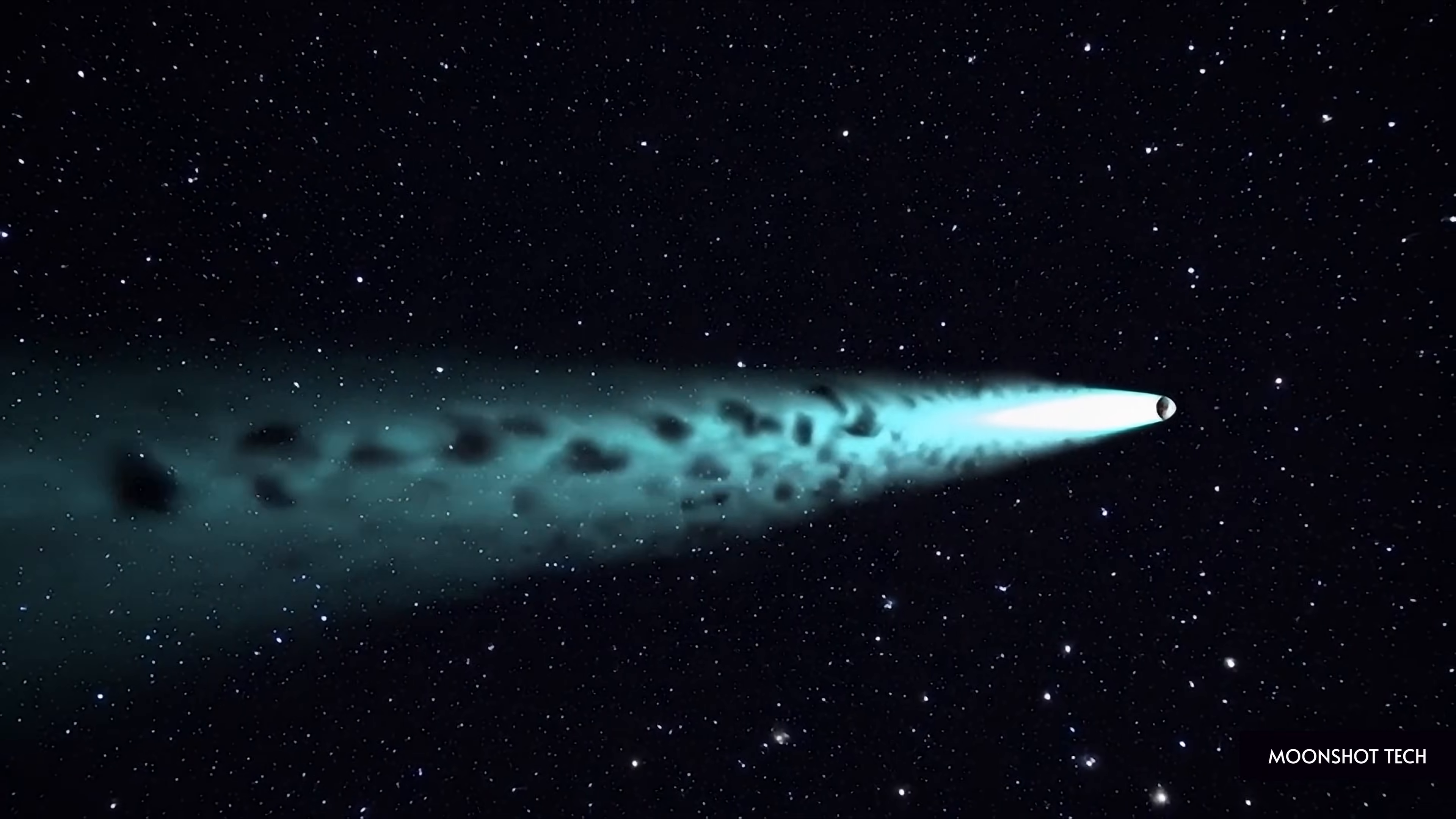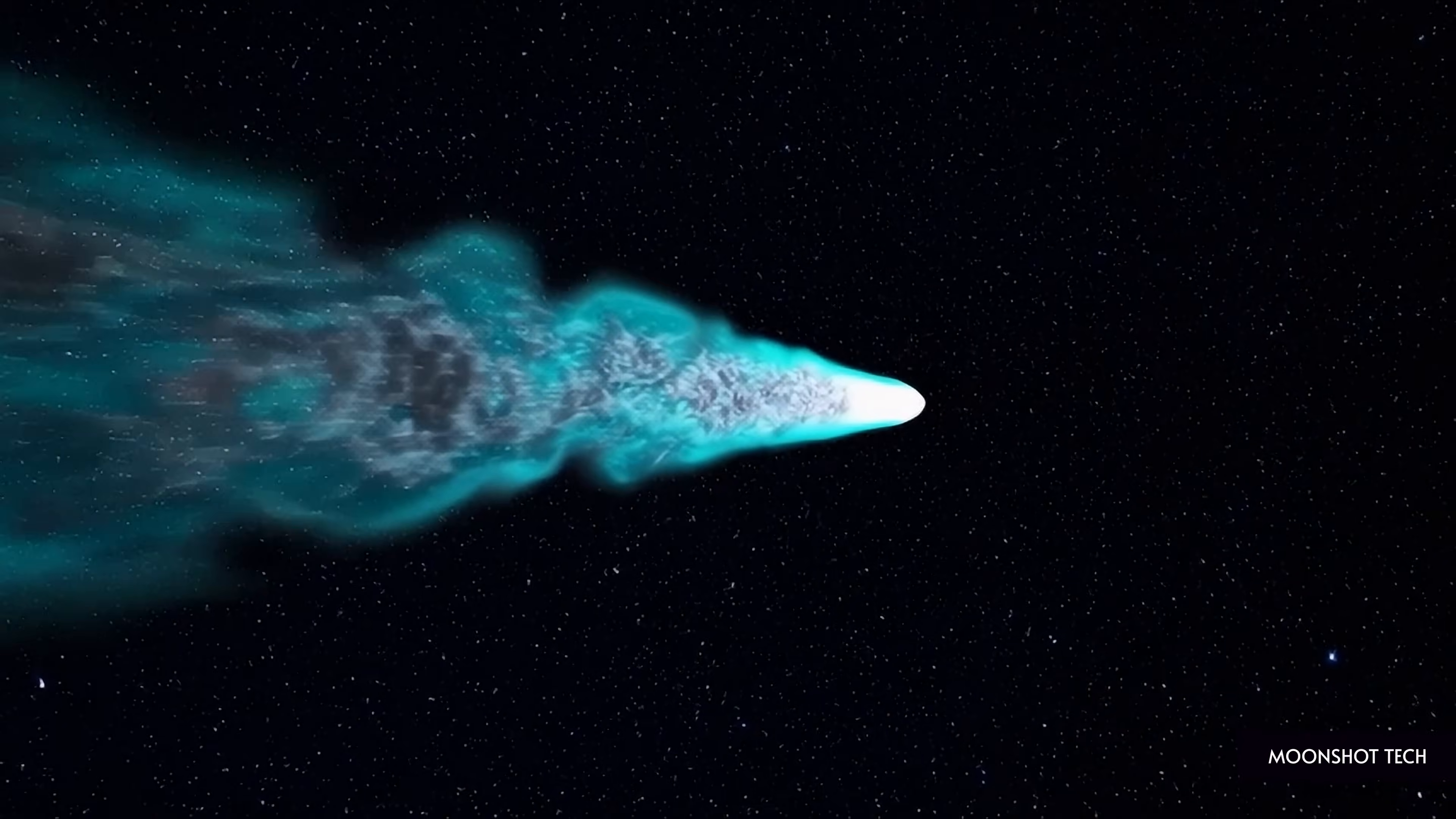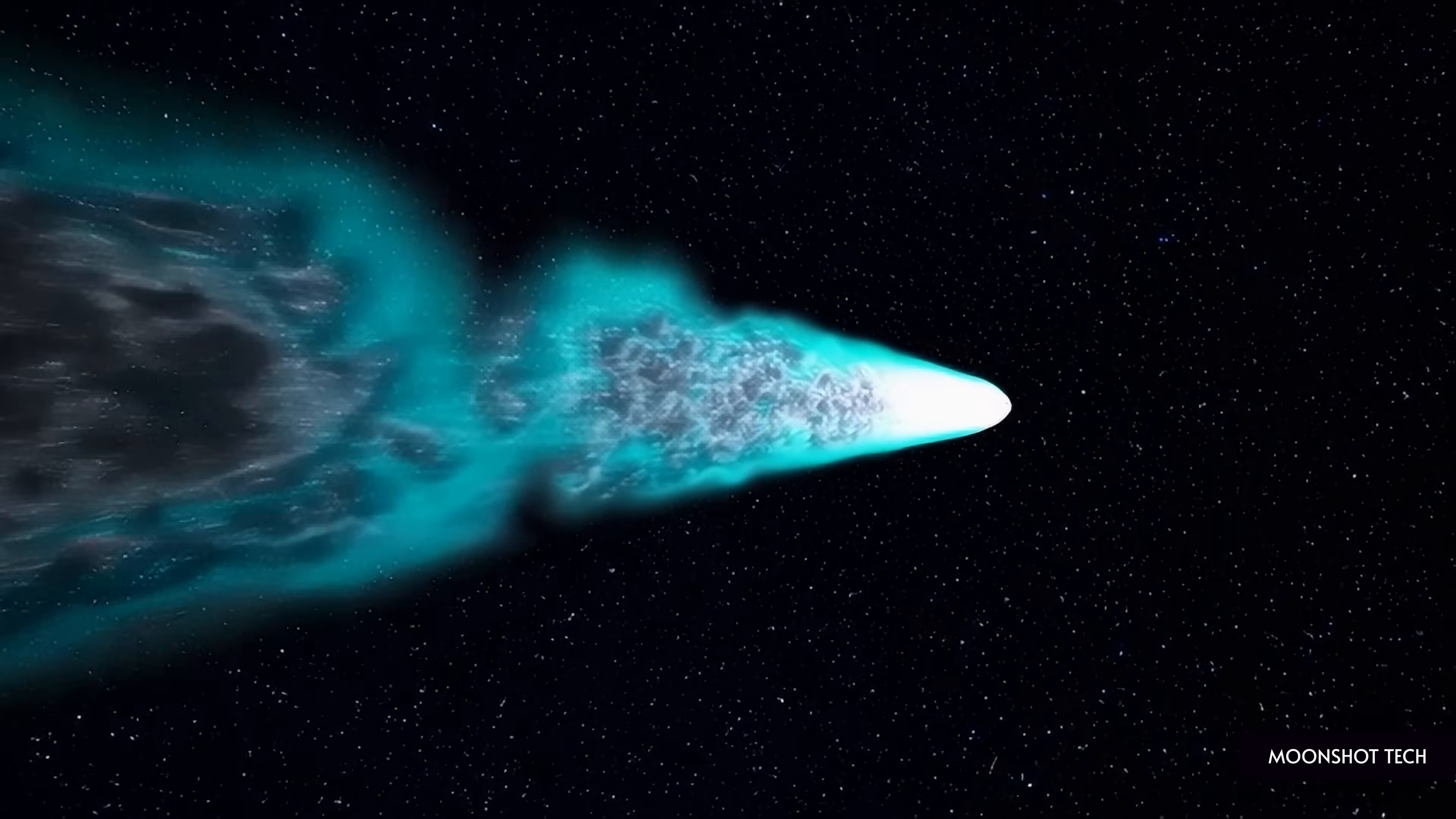For comparison, normal comets show diffuse irregular jets pointing away from the Sun. This is organized, symmetric, intensifying when it should be fading.